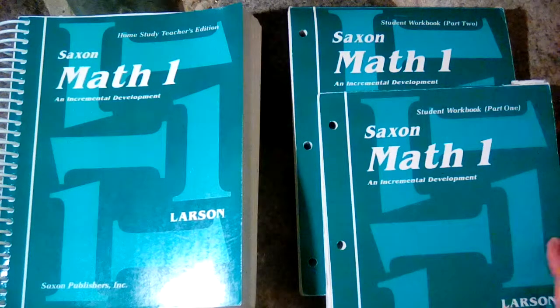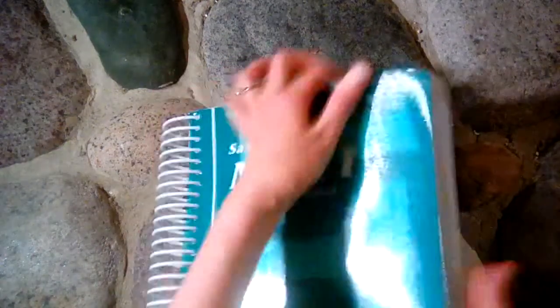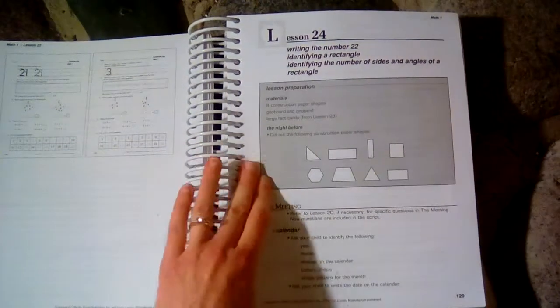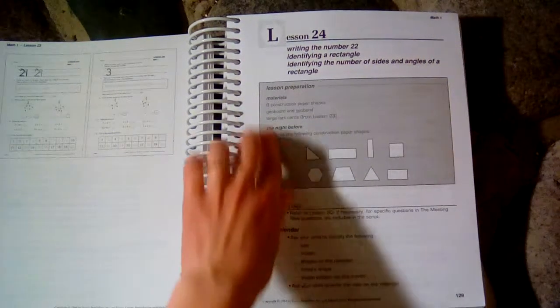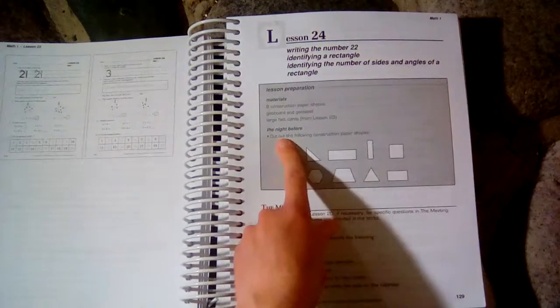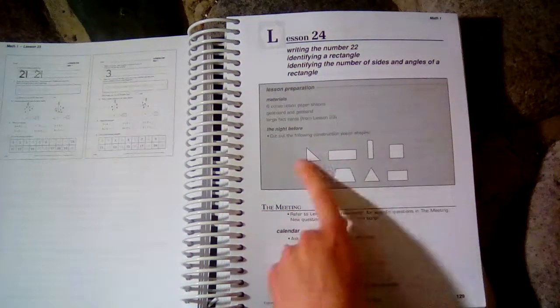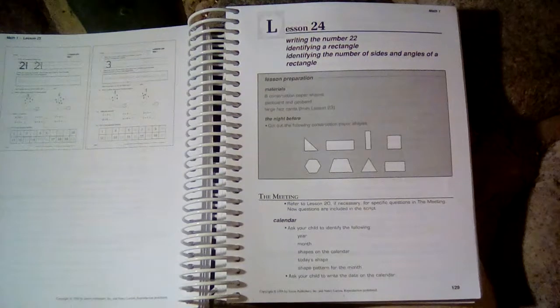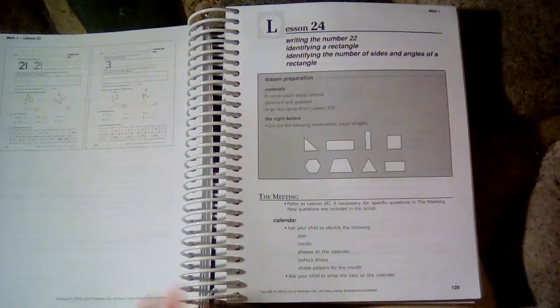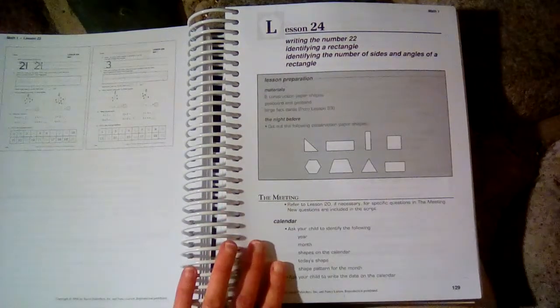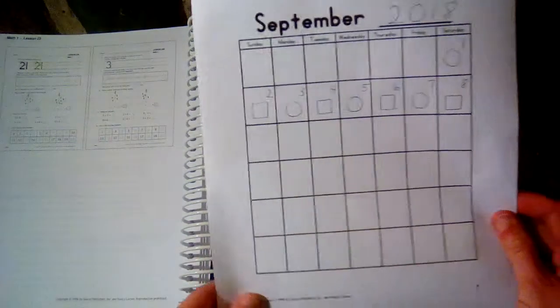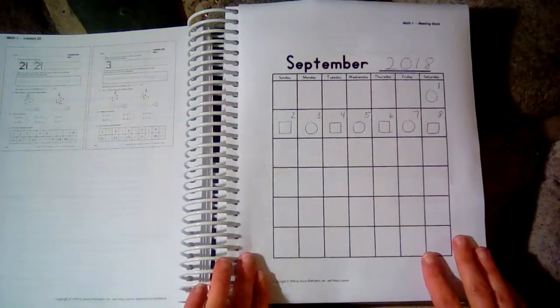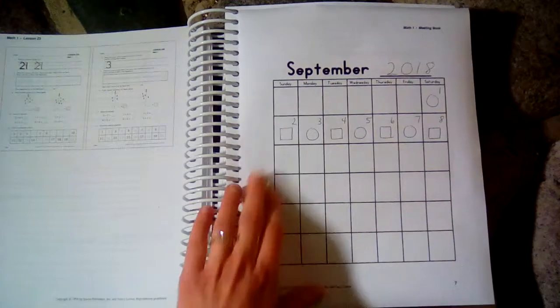So let's take a look at the teacher's manual and see what a lesson would be like. I'm going to take a look at lesson 24. So this gray box here is what you will need to prepare for the lesson, the manipulatives you will need, or if you need to prepare anything like for this lesson, you need to cut out the following construction paper shapes to use in the lesson. So the first thing you will do with your child will be the meeting, and you will use the meeting book for this section. So the meeting book really is like a glorified calendar, and I did print up this sample online of the meeting book for Math 1. So this is what it looks like.